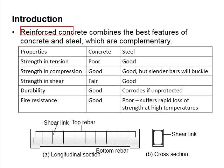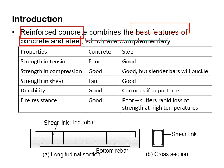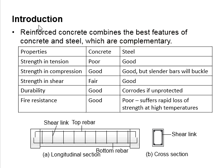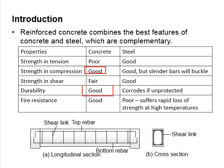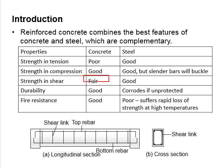Reinforced Concrete combines the best features of concrete and steel, and these materials are complementary. The properties of concrete and steel are outlined here. Concrete is basically strong in compression, possesses high durability and fire resistance. It has fair shear resistance but is poor in tension.